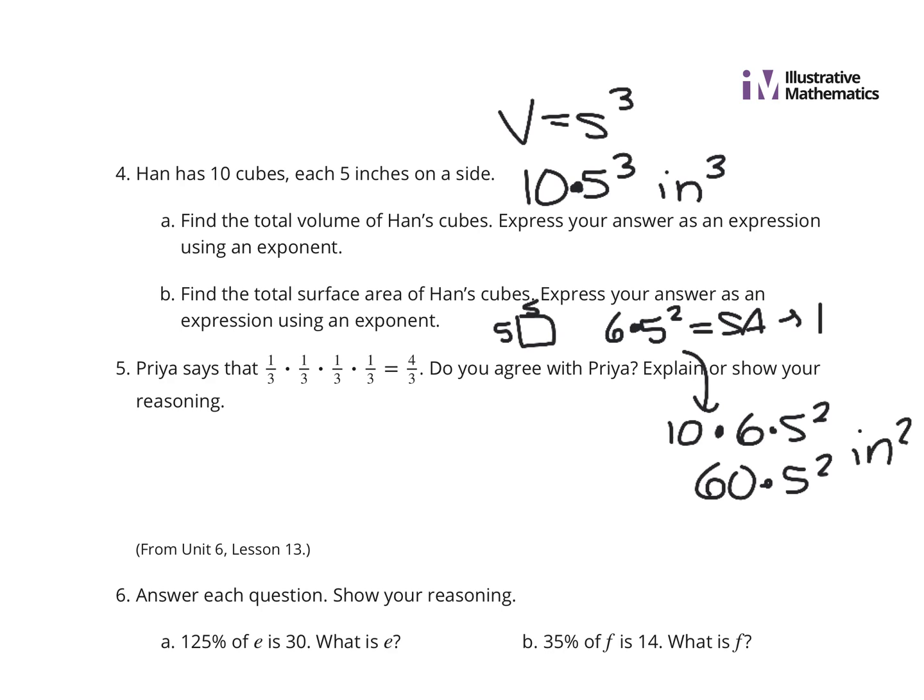Now, Priya says that 1 third times 1 third times 1 third times 1 third is 4 thirds. Do you agree? Well, simply no. If it was addition, that would be true. But 1 third times 1 third times 1 third times 1 third, you're multiplying 1 times 1 times 1 times 1 to get 1. 3 times 3 is 9 times 3 is 27 times 3 is 81. And so you get 1 81st there. So, no, it's absolutely not right.